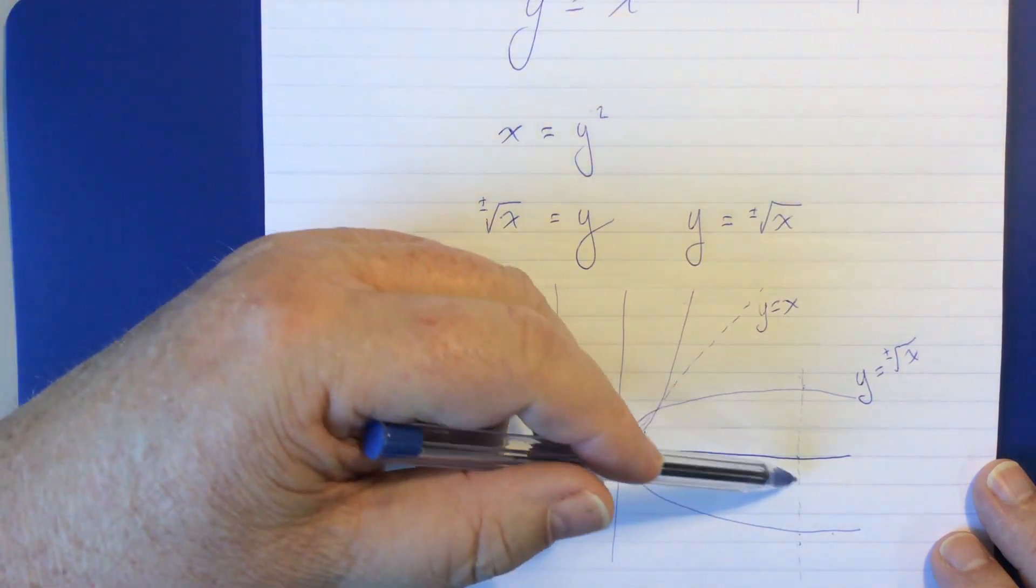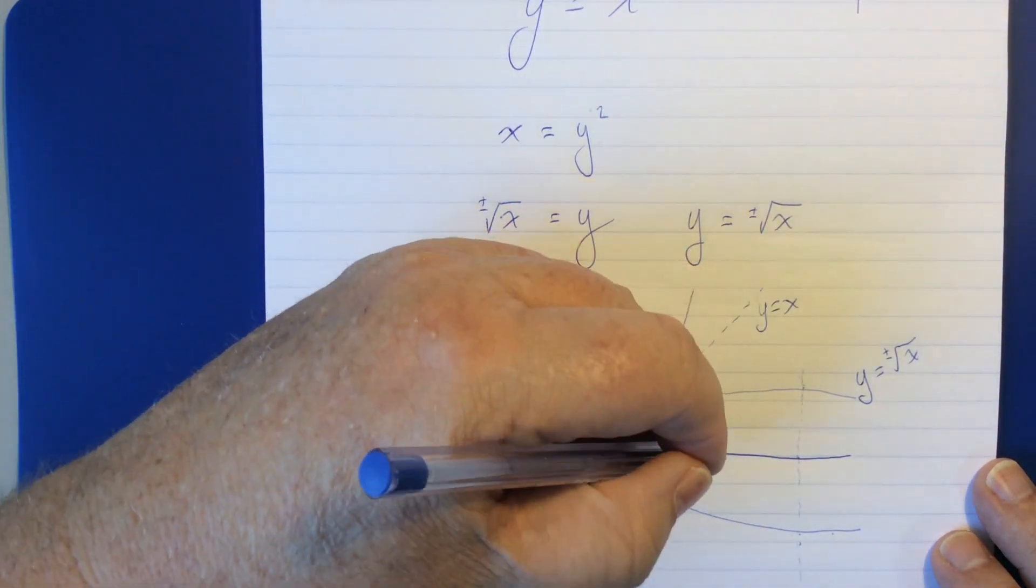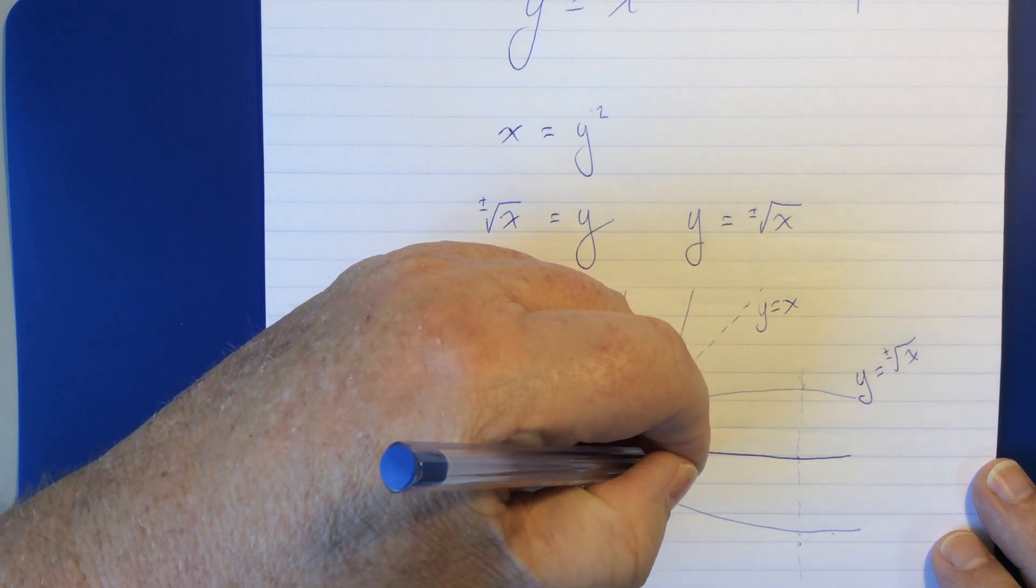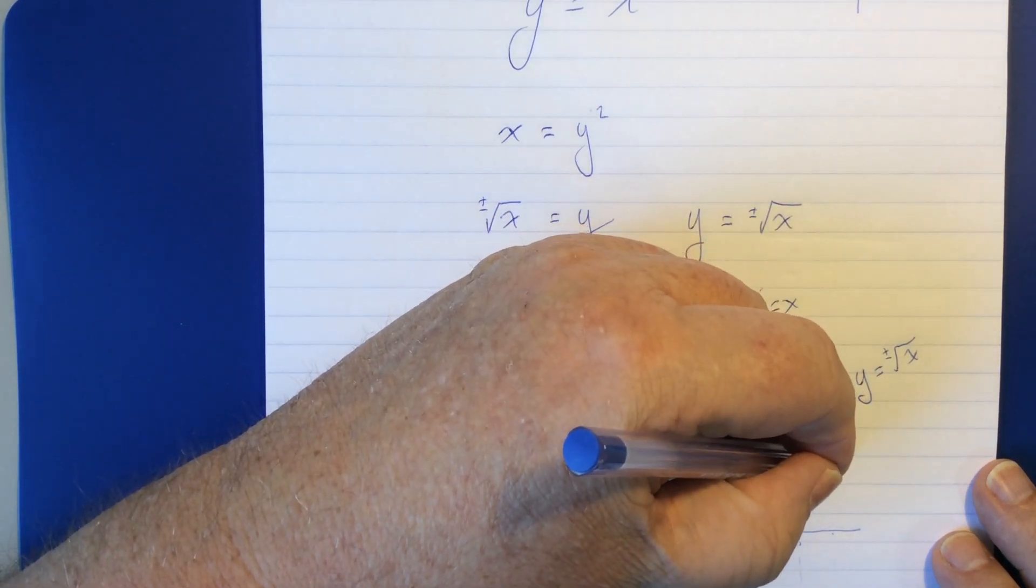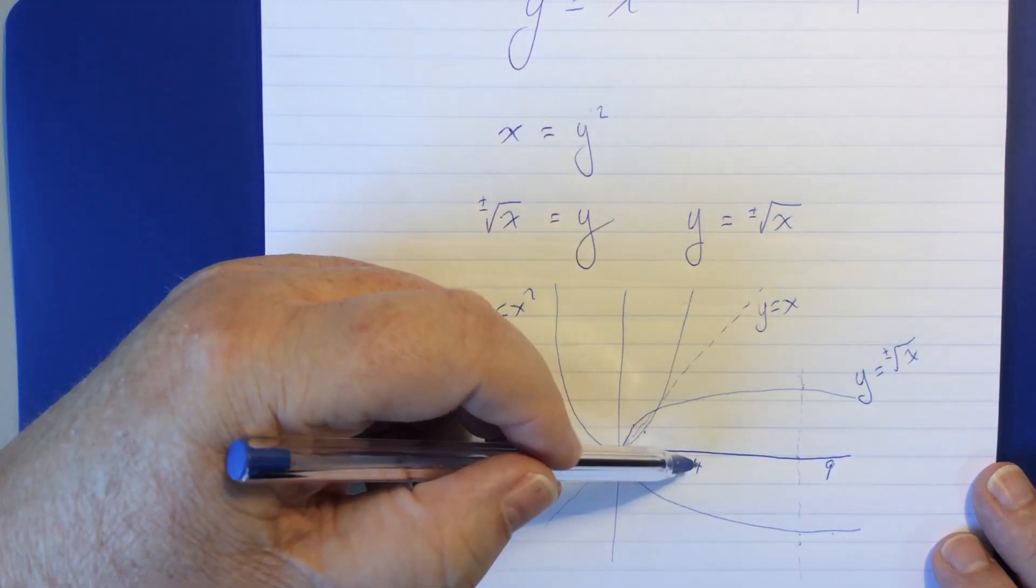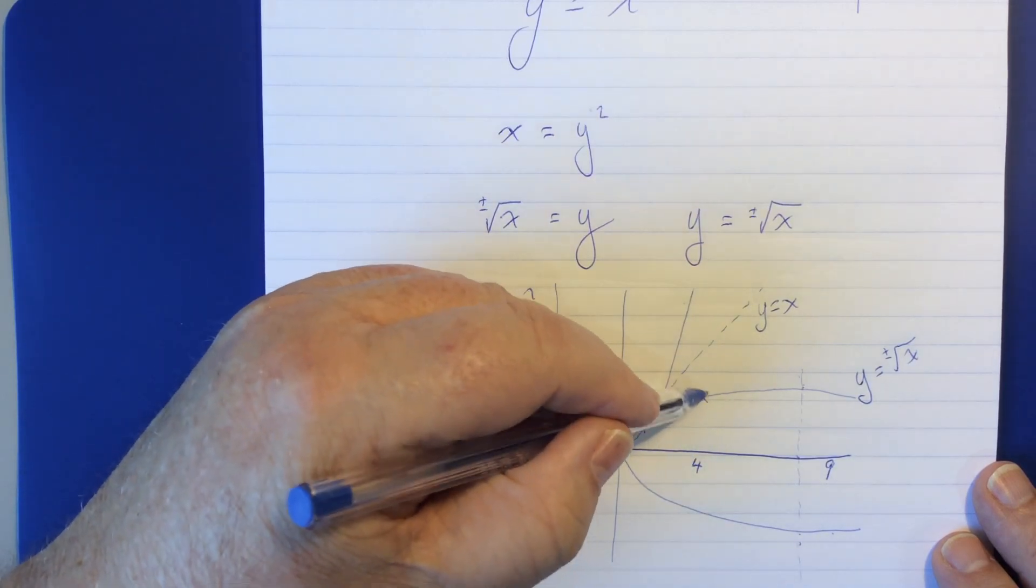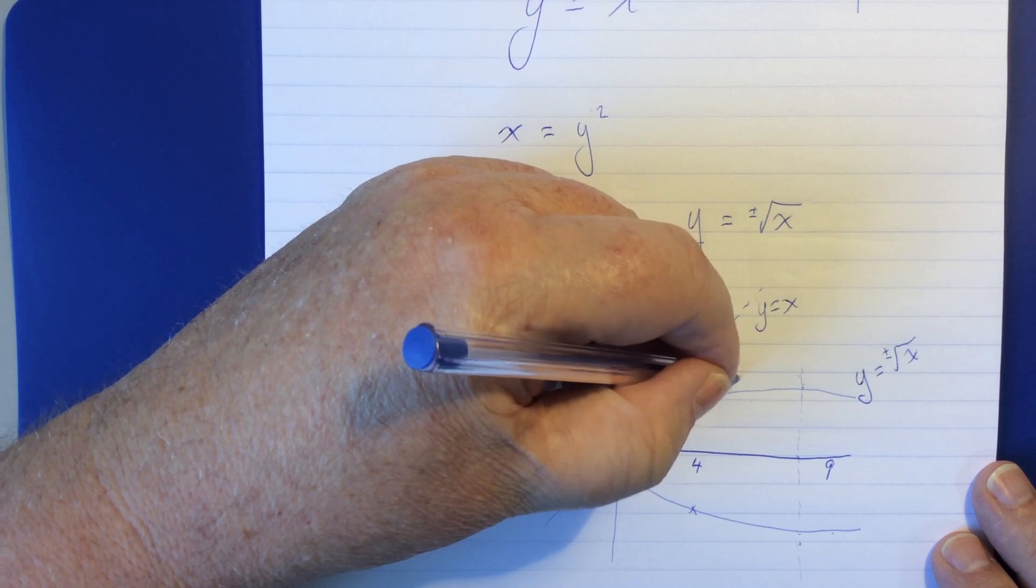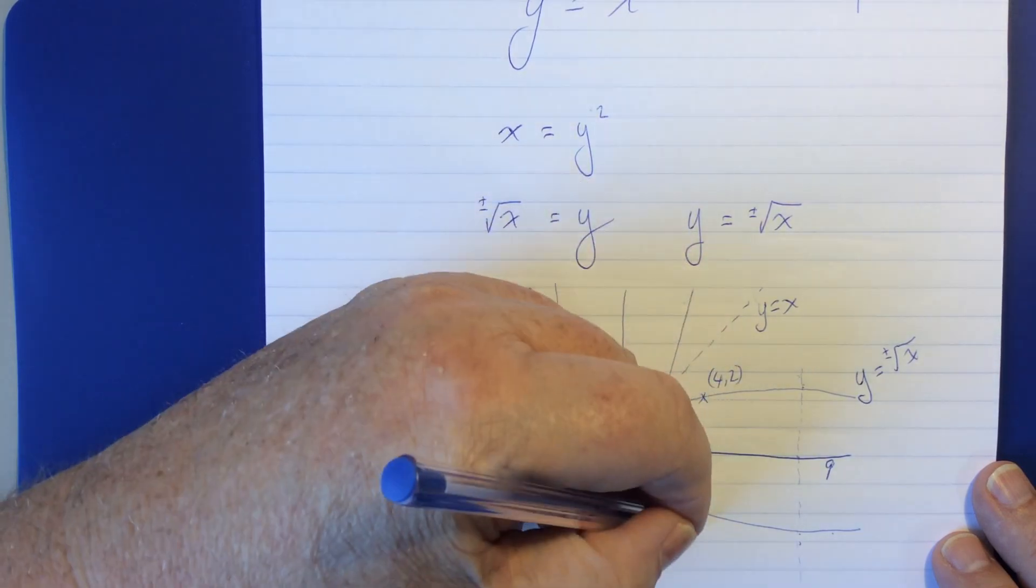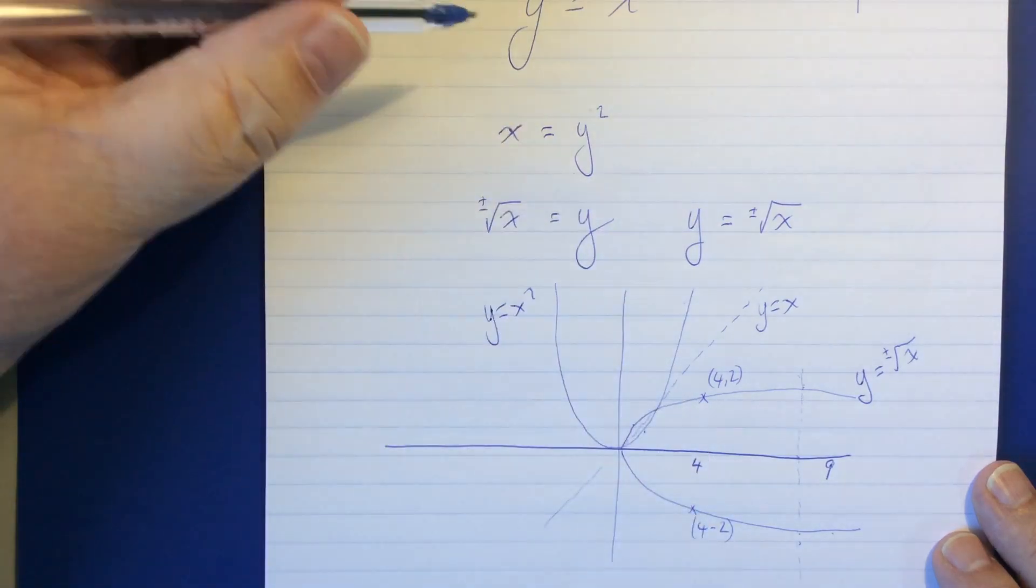So, I'm going to map just a couple of points so that you can see how this works. So, we'll take the point 4 here on the x-axis and 9 here because these are easy. So, y is equal to plus or minus the square root of 4. So, that's that point there and that point there. And so, this is 4, 2 and this is 4, negative 2.